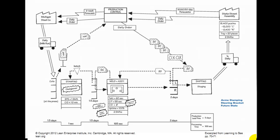When you do continuous improvement, you don't really try to focus on and shorten the value-add time. You try to cut down on the time that gets in the way — the stuff that gets in the way of you doing your work. So you try to cut down the top line, not so much the bottom line. In this case, the bottom line went down through efficiency as well, from 188 seconds to 165 seconds. So you cut out a lot of lines, and now what you have is continuous flow.